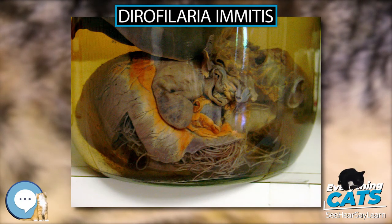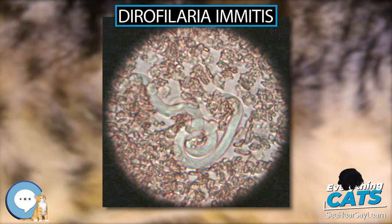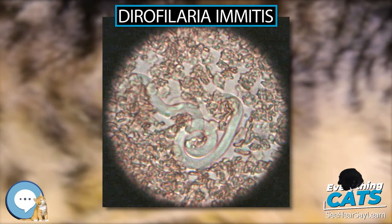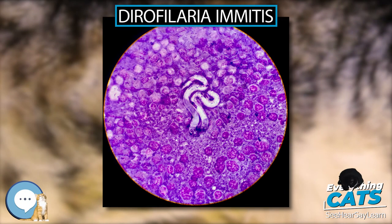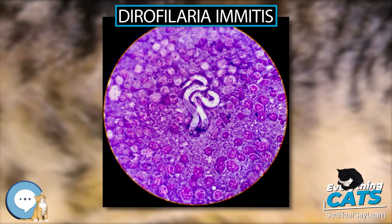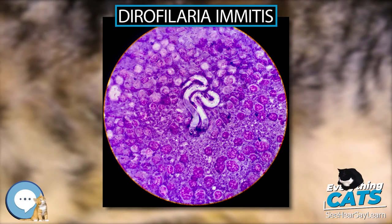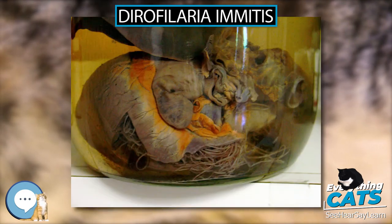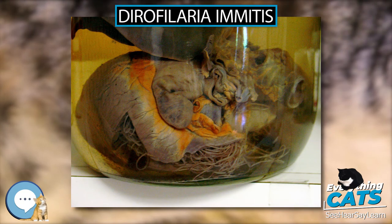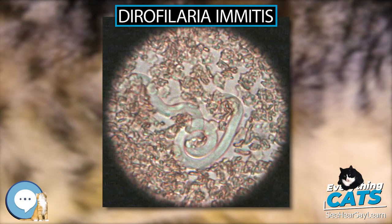Topical treatments are available as well. Advantage Multi (imidacloprid plus moxidectin) topical solution uses moxidectin for control and prevention of roundworms, hookworms, heartworms, and whipworms, as well as imidacloprid to kill adult fleas. Dotsalamectin (Revolution) is a topical preventive likewise administered monthly; it also controls fleas, ticks, and mites.